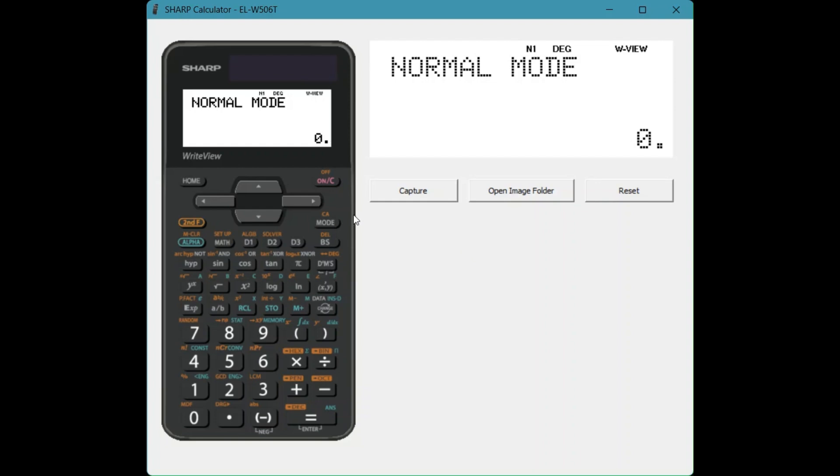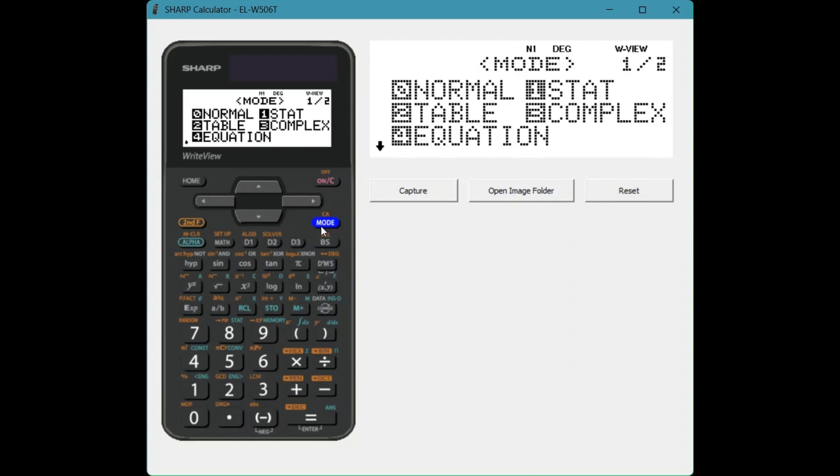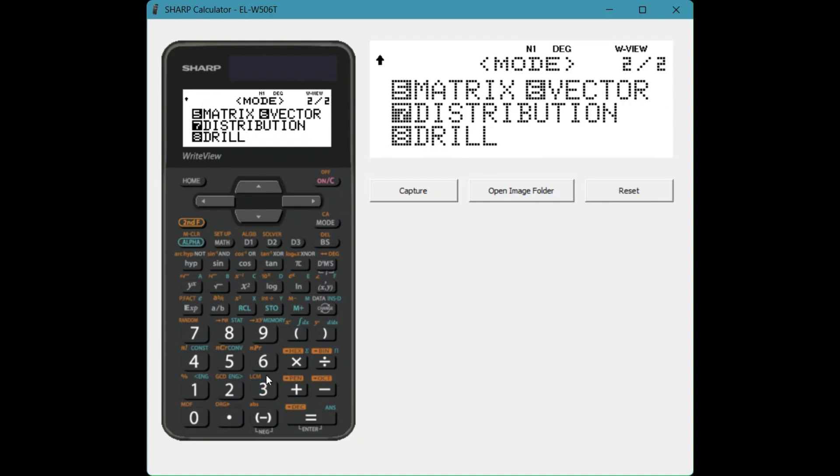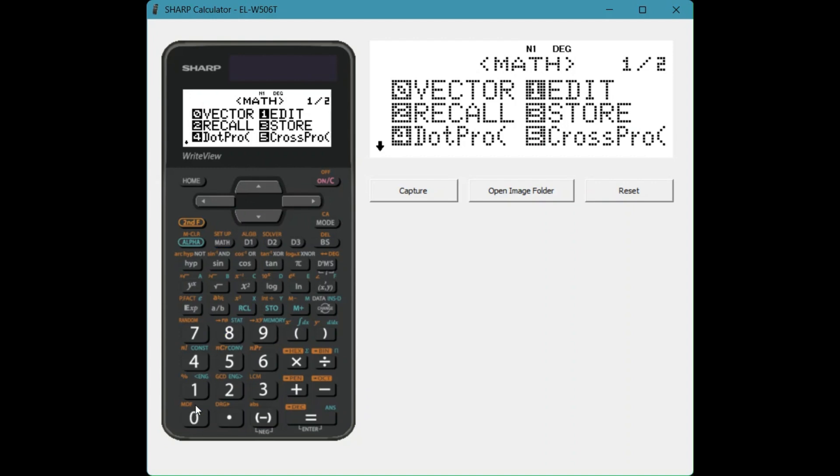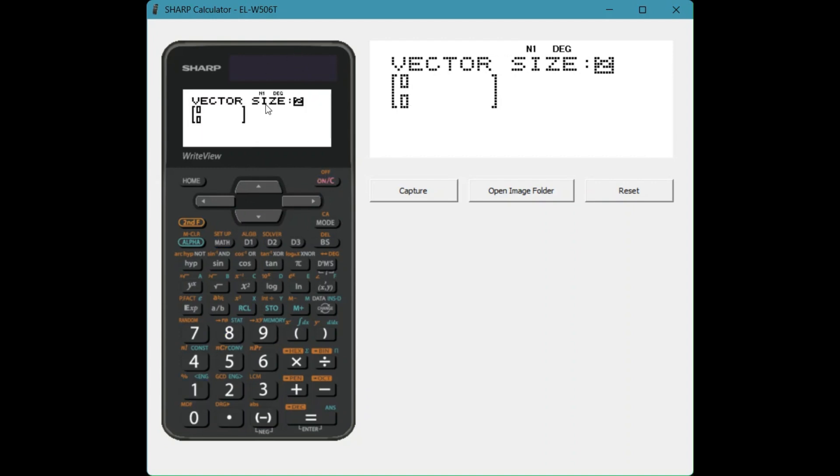First we need to find vector mode. We're going to say mode, then 6 for vector. Now once we've done that, we need to edit our vector. We're going to say math and choose 1 for edit. You can see it automatically gives you a size two, and you have a choice between two or three spaces in your vector. Once you've selected your size, just press equals and type in your number. I'm just going to do a basic one: 2, 3, just for the example.